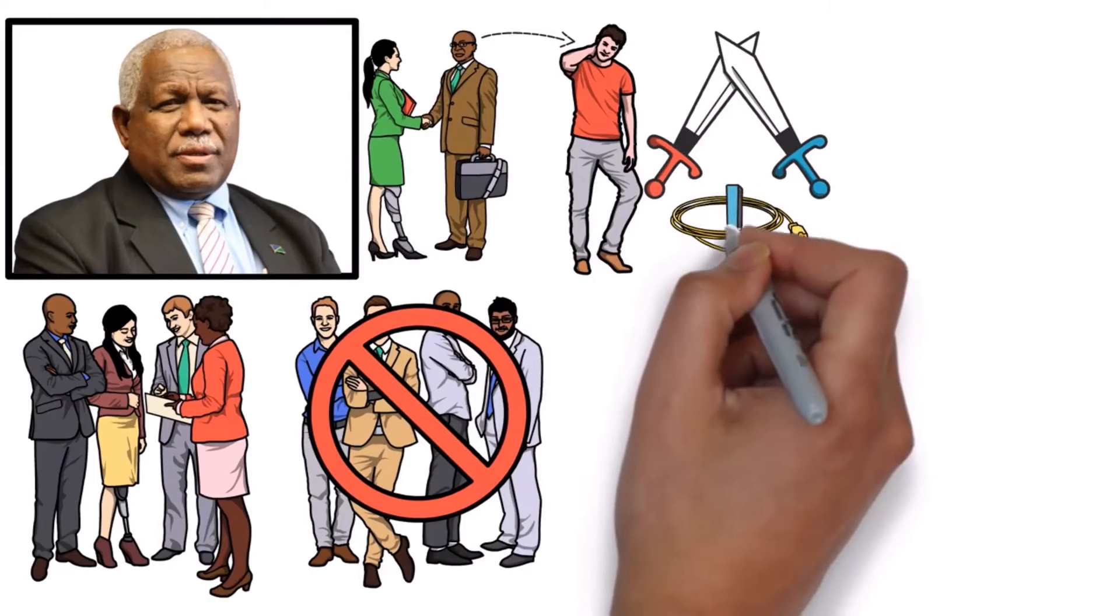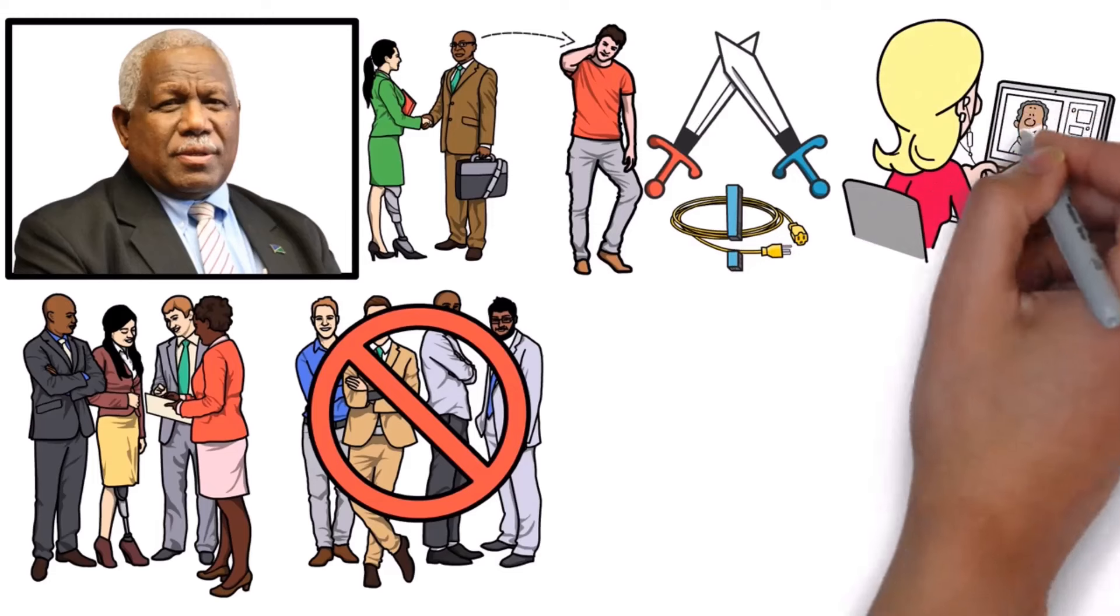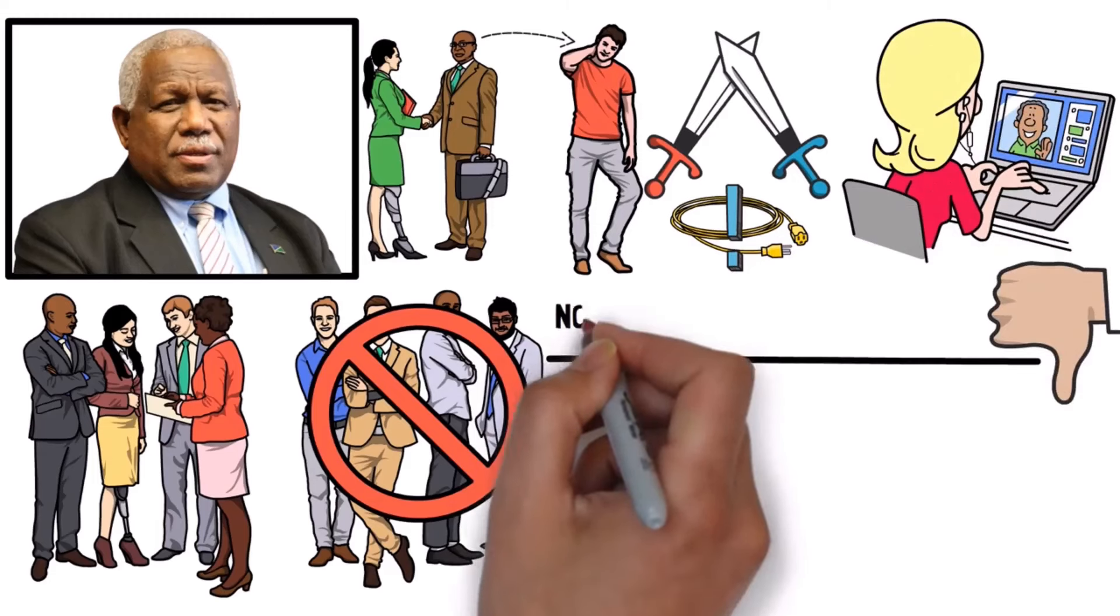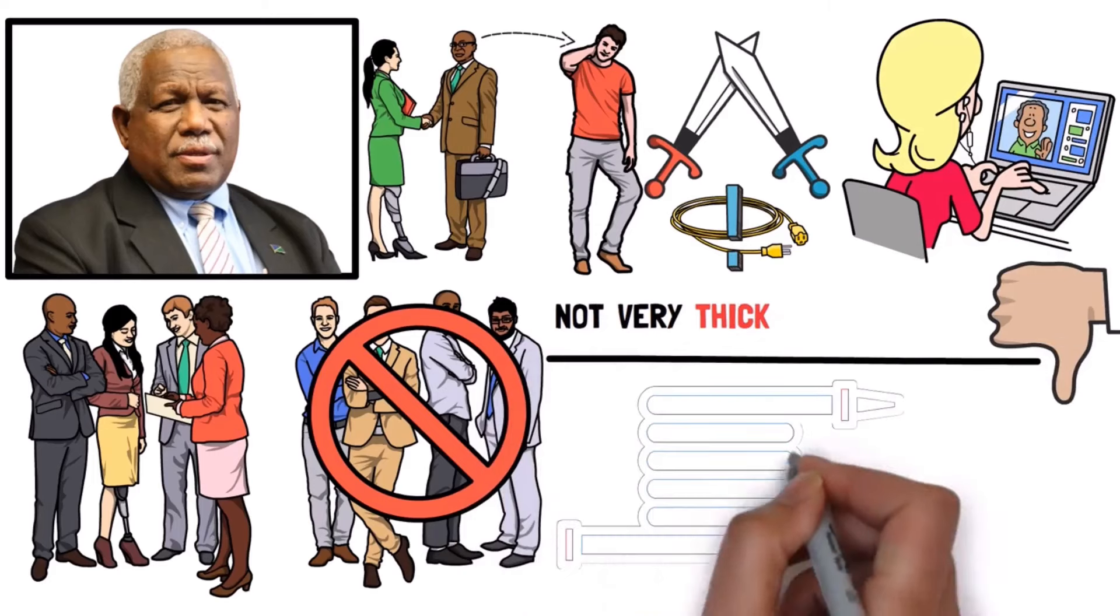These cables are super important because they make the internet work all around the world. But they have a weakness. Even though they're really long, they're not very thick, about the width of a garden hose.